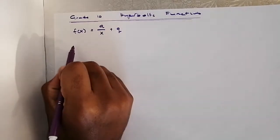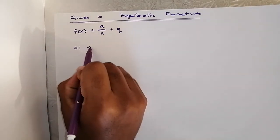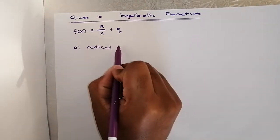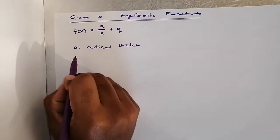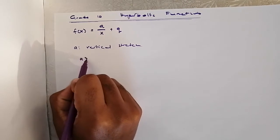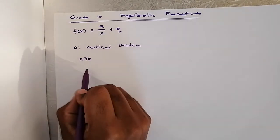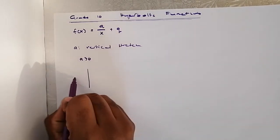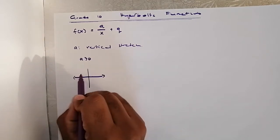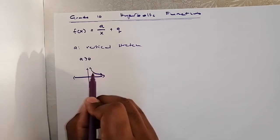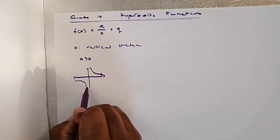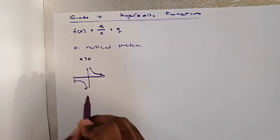First of all, let us appreciate a. a is the vertical stretch of the graph. And let us appreciate, when a is positive, the wings of the hyperbola will be on the first quadrant and on the third quadrant, right?